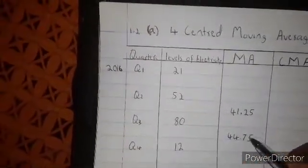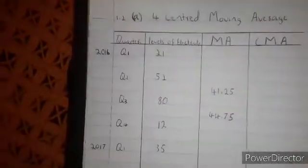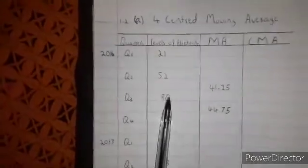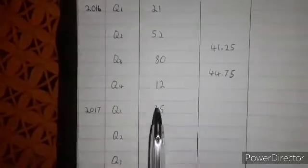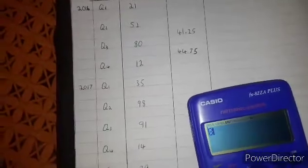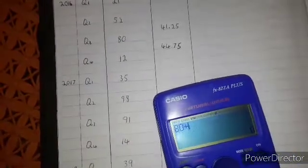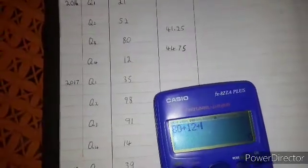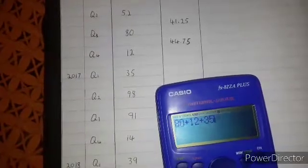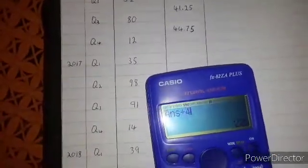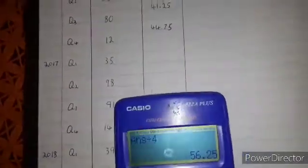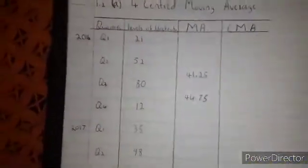The four-point standard moving average gives us 44.75. We place it in the middle — 44.75 goes in between. Then we start from 80, leaving the previous value. We are going to say 80 plus 12 plus 35 plus 98. We add 4 numbers, so 80 plus 12 plus 35 plus 98 equals, then divide by 4 — always divide by 4 because we are doing the four-point standard moving average.